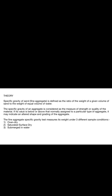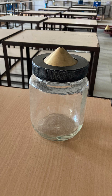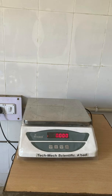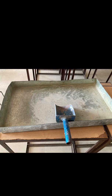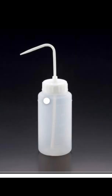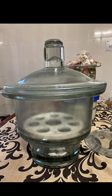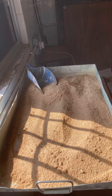In today's experiment we will be considering an oven dried sample of sand. The apparatus required for this experiment are a standard pycnometer bottle of 1 litre capacity, a weighing balance, a thermostatically controlled oven, a glass rod, a container to keep our material, distilled water, a desiccator, and our sample of sand.